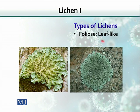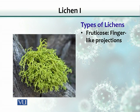Lichens can also be found as leaf-like structures, which we call foliose — the second type of lichens. They look like leaves and grow on rocks and bricks. The third type is fruticose: they are finger-like projections, as seen growing on a dried tree trunk.